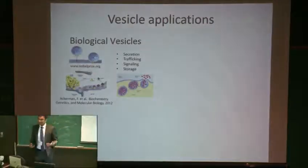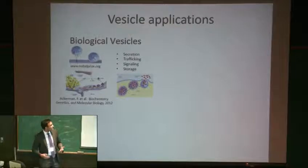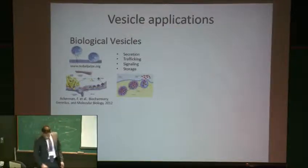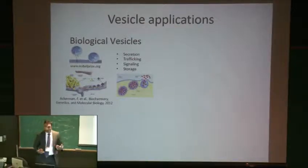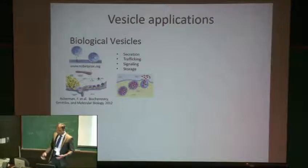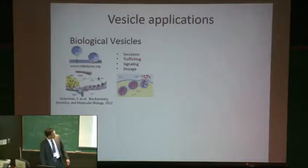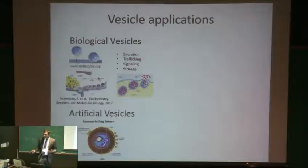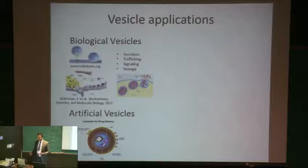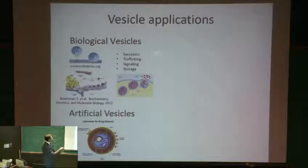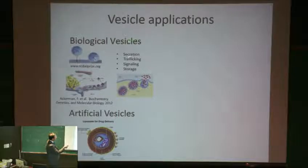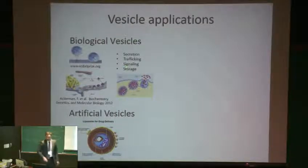So what exactly is a vesicle? A vesicle is a sack of fluid enclosed by a phospholipid bilayer. These entities are important from both a biological and an engineering standpoint. From a biological standpoint, vesicles are commonly used to store and transport nutrients within the cell and are implicated in many different biological functions such as secretion, trafficking, signaling, and storage.